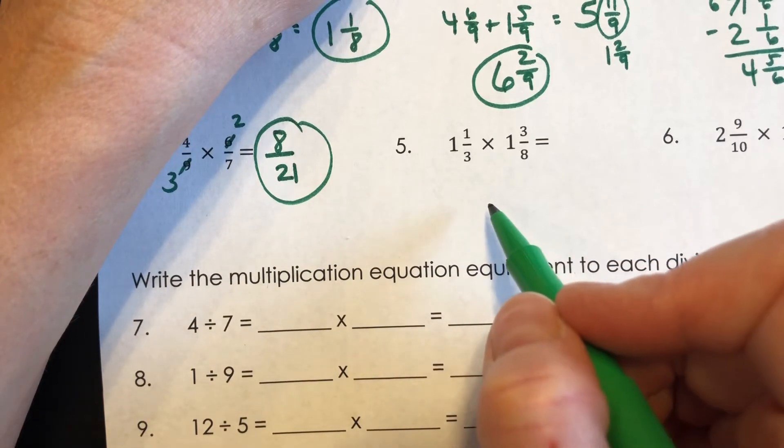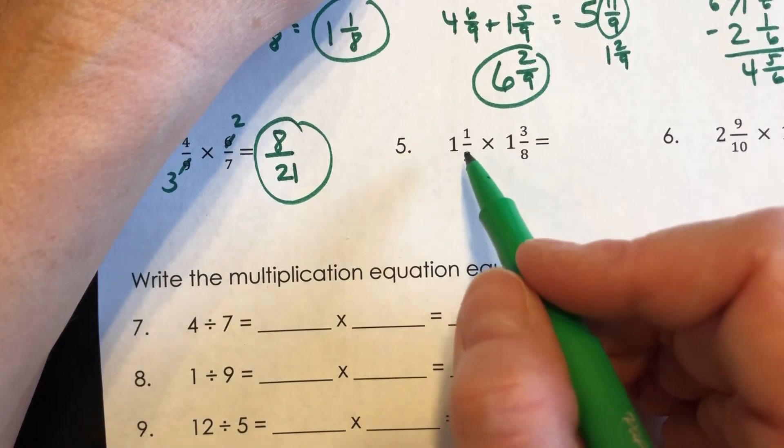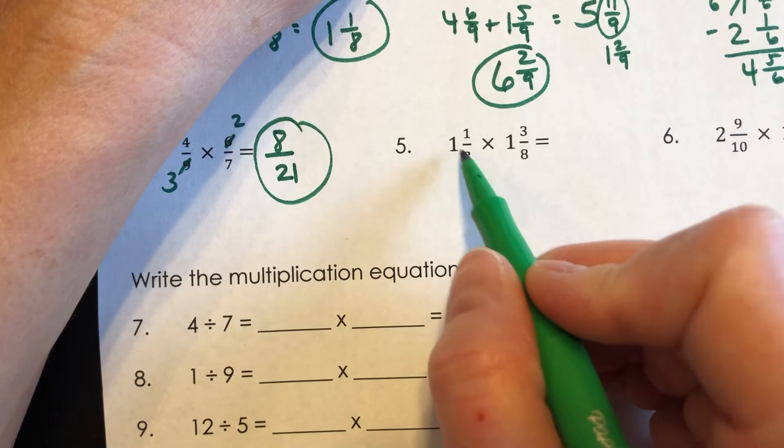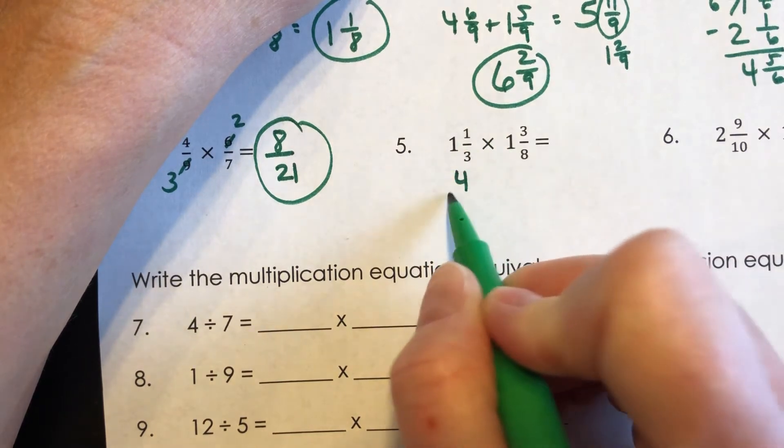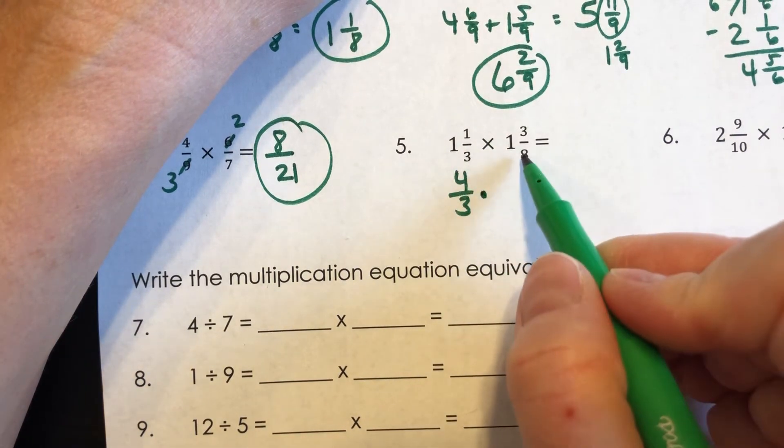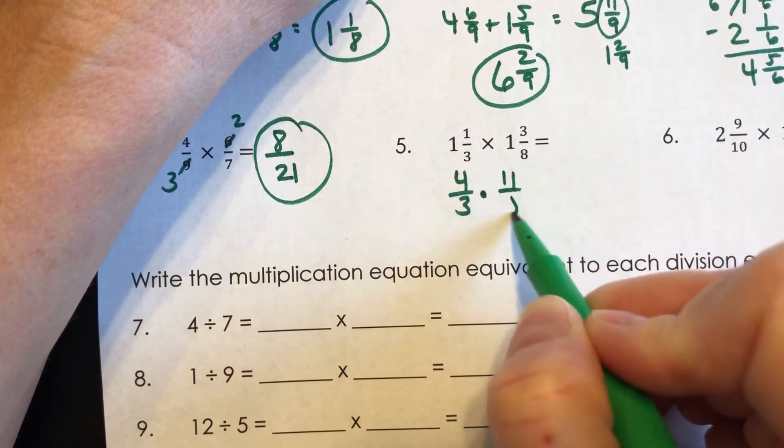For number five, these are two mixed numbers that we are multiplying. So we need to change these to improper fractions first. Three times one is three, plus one is four-thirds times. Eight times one is eight, nine, ten, eleven, eighths.